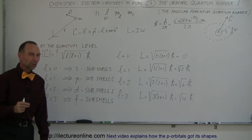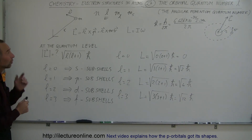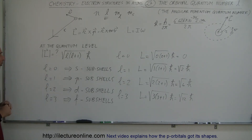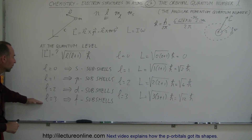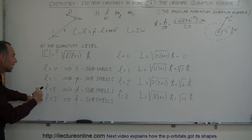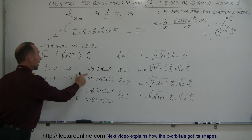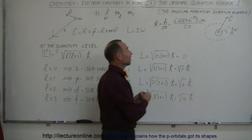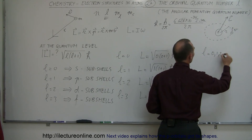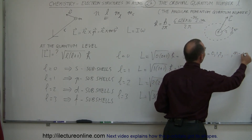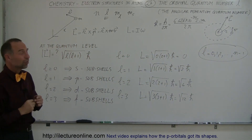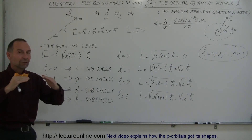The electron can only have very specific angular momentum values depending on the orbital quantum number L. The limitation is that L can equal 0, 1, 2, and so forth, all the way up to n minus 1. This is a very important restriction because it determines what kind of sub-shells can exist at the various energy levels.